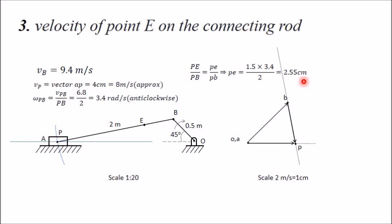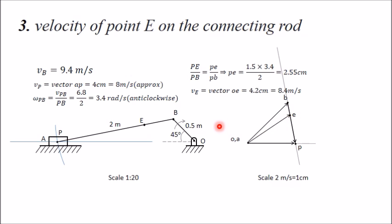Measuring 2.55 cm from point p along pb gives point e in the velocity diagram. Joining the fixed point o (or a) to e gives the absolute velocity of E. This line measures 4.2 cm, and applying the scale gives a velocity of E equal to 8.4 meters per second.